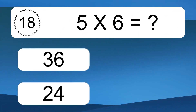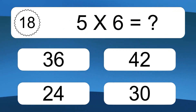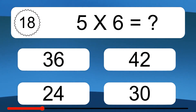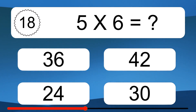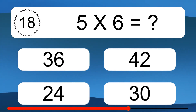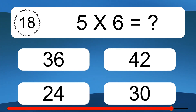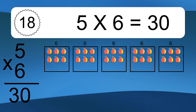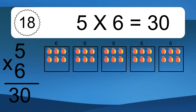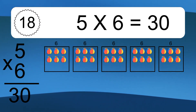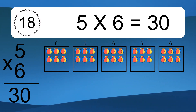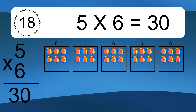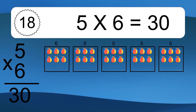5 times 6 equals what? We have 5 boxes and each box has 6 colorful balls inside. If you count all the balls in all the boxes together, you will have 5 times 6 balls. This equals 30 balls.